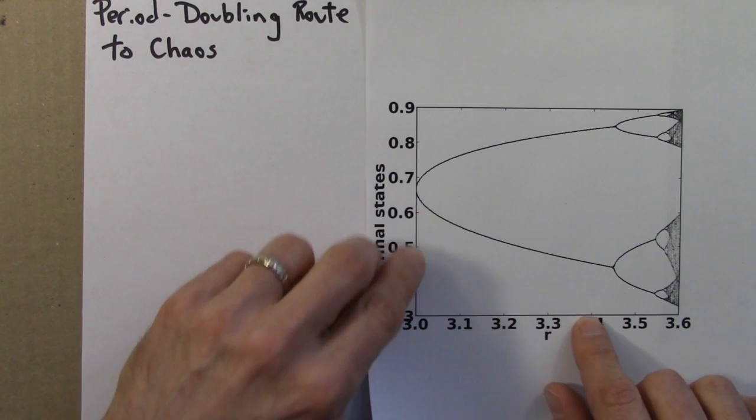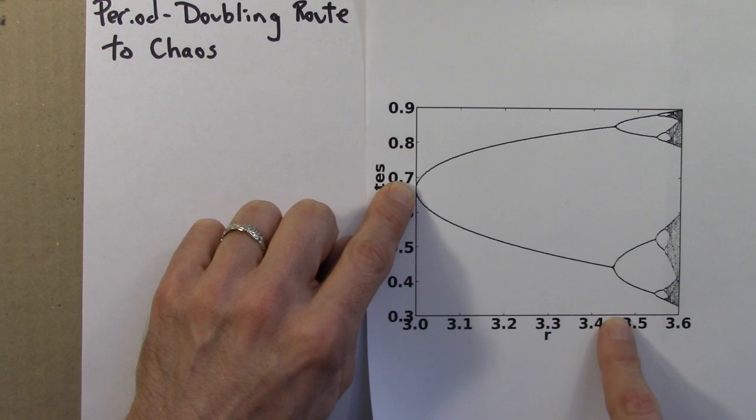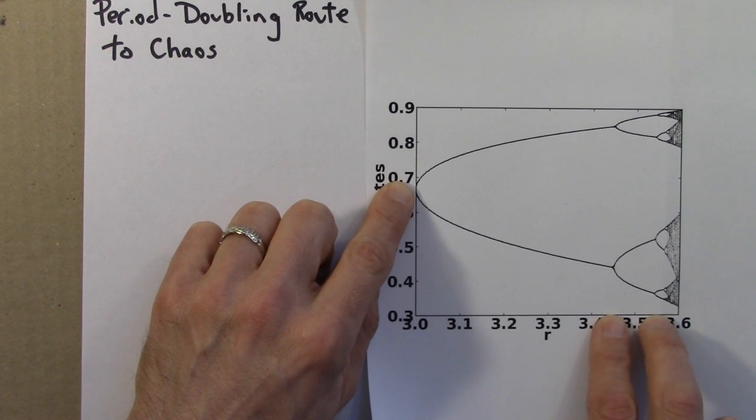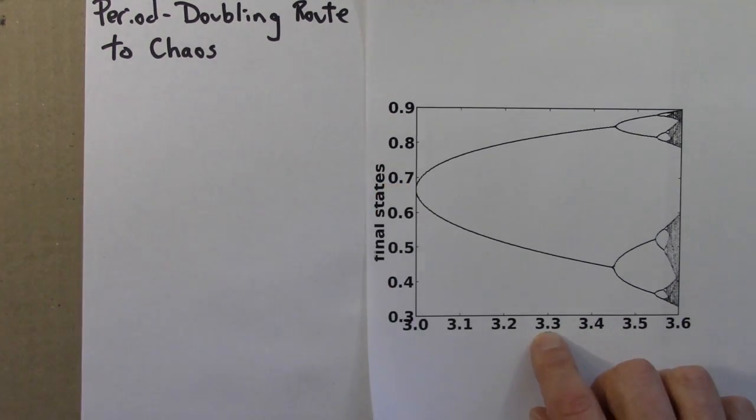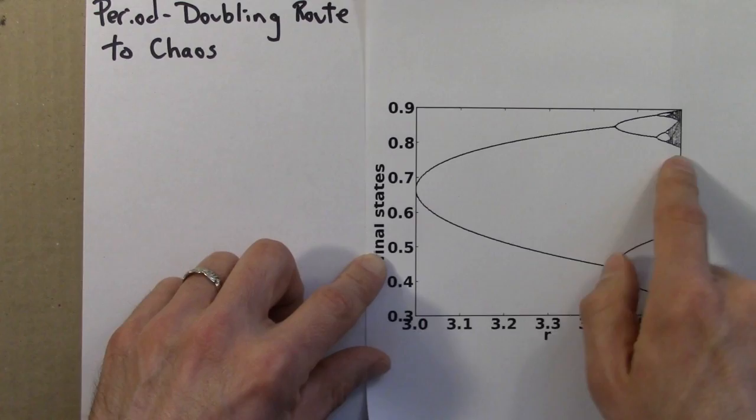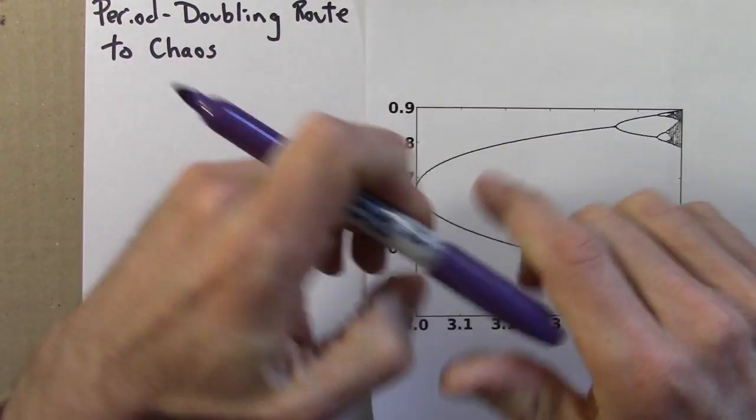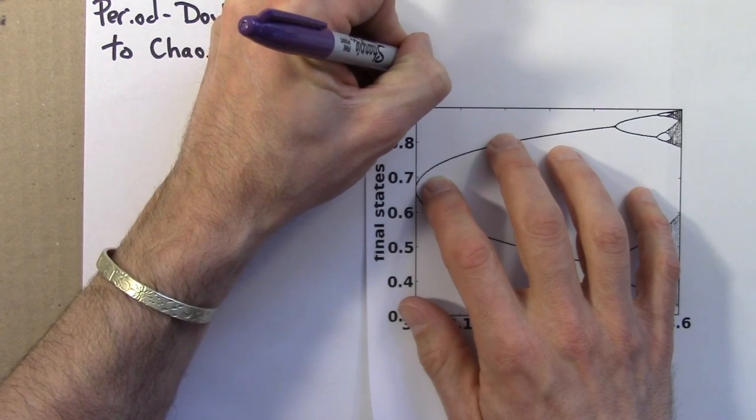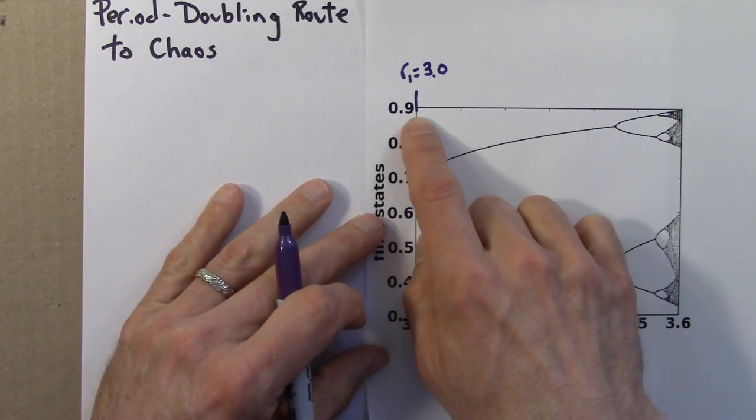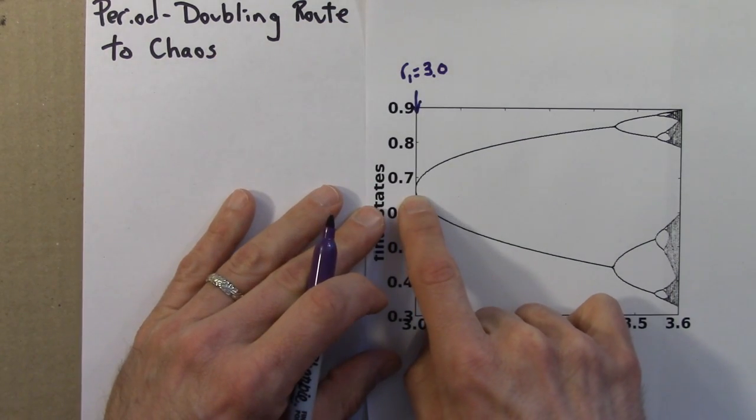So I want to start by looking at the length of this. How long, in the sense of what range of R values gives me period 2 behavior, what range of R values give me period 4, and what range of R values give me period 8. So I want to look at what these R values are, where these transitions occur. And I'll call the R values for this first transition R1, and that's 3.0. So this transition occurs right when R is 3.0.